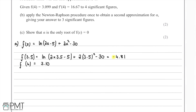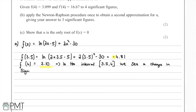We have f(3.5) = -4.81 and f(4) = 3.10. So in the interval 3.5 to 4 we see a change in sign, which means there is a root within this interval. We denote this root α, and therefore we have completed part A.